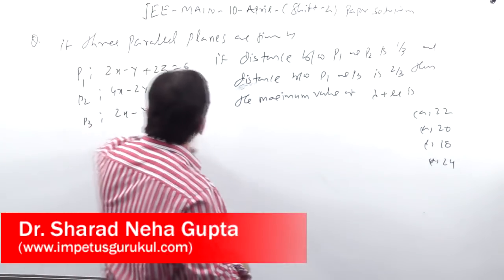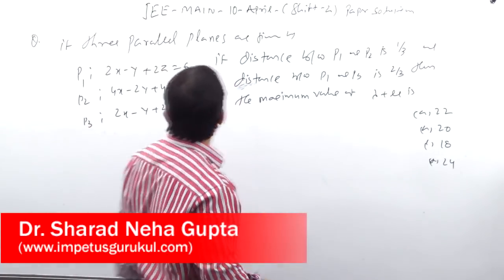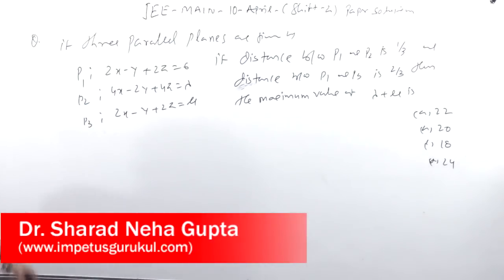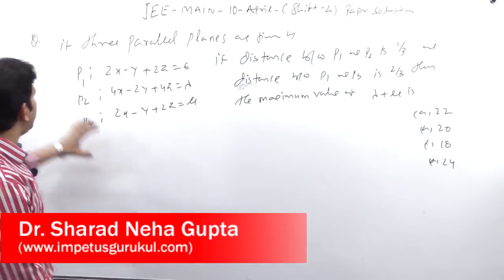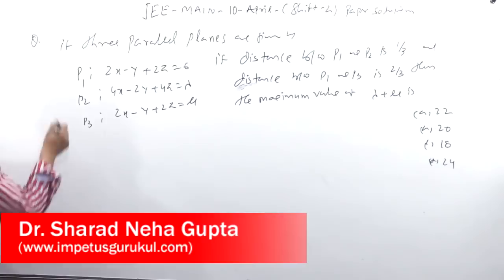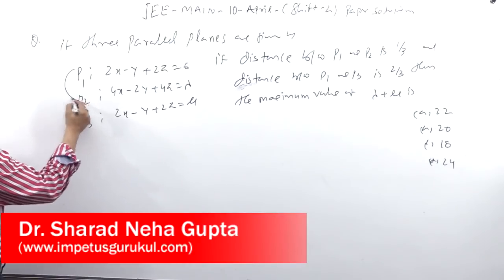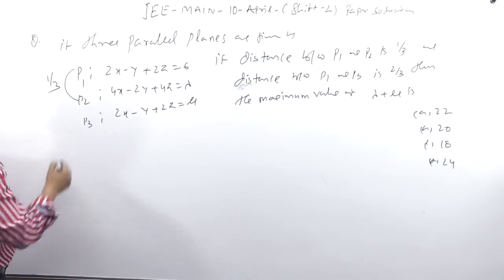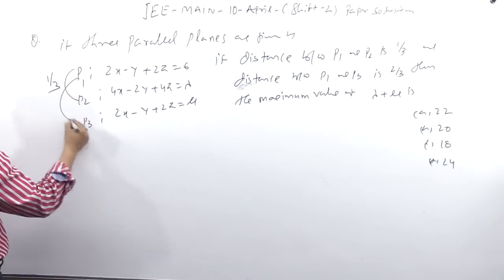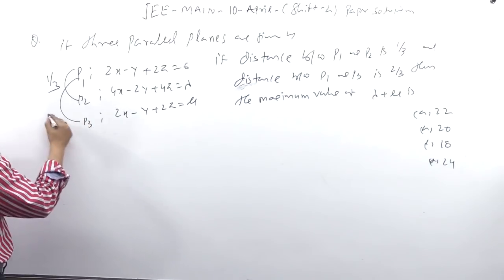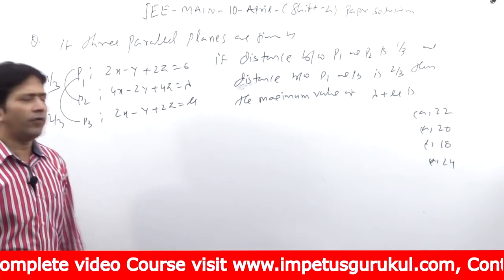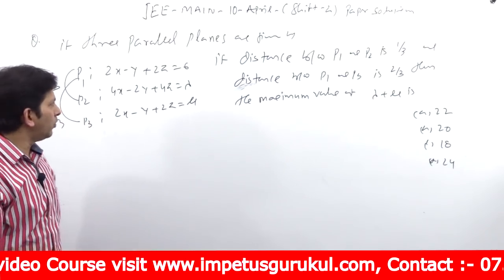Next question: if three parallel planes are given, and the distance between P1 and P2 is 1/3, and the distance between P1 and P3 is 2/3, then find the maximum value of λ plus μ.